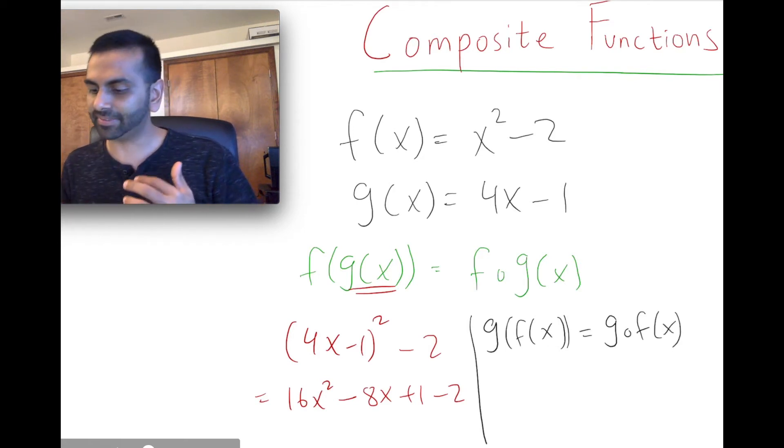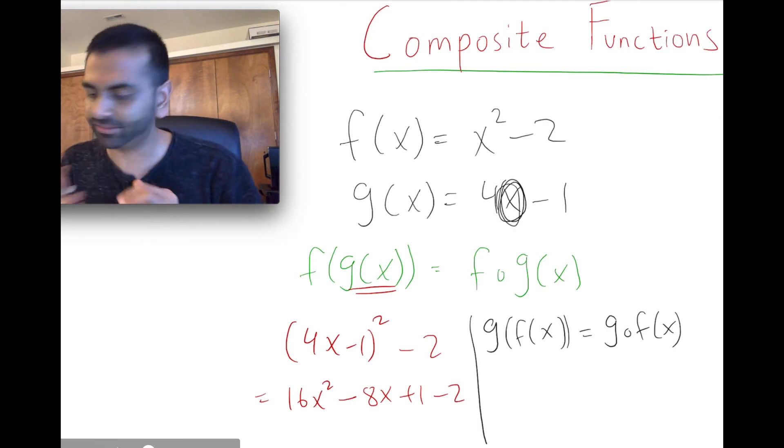So now it's the opposite. Now, into g, you're doing 4 times whatever f of x was, minus 1. So g of x is normally 4x minus 1. You're just replacing this x with what f is now, which is x squared minus 2.